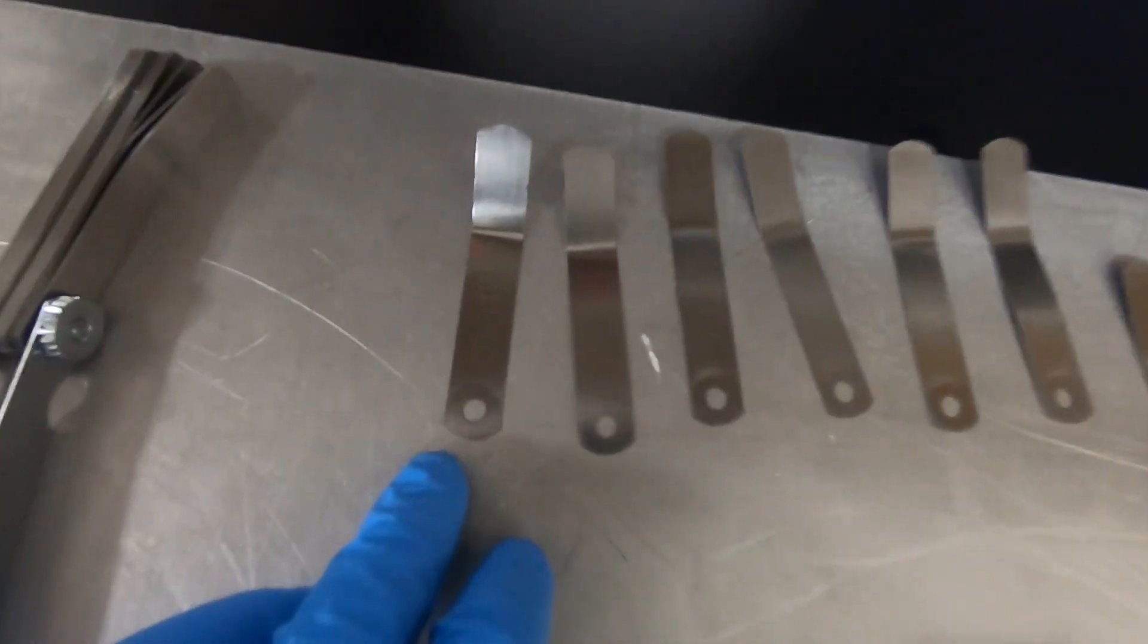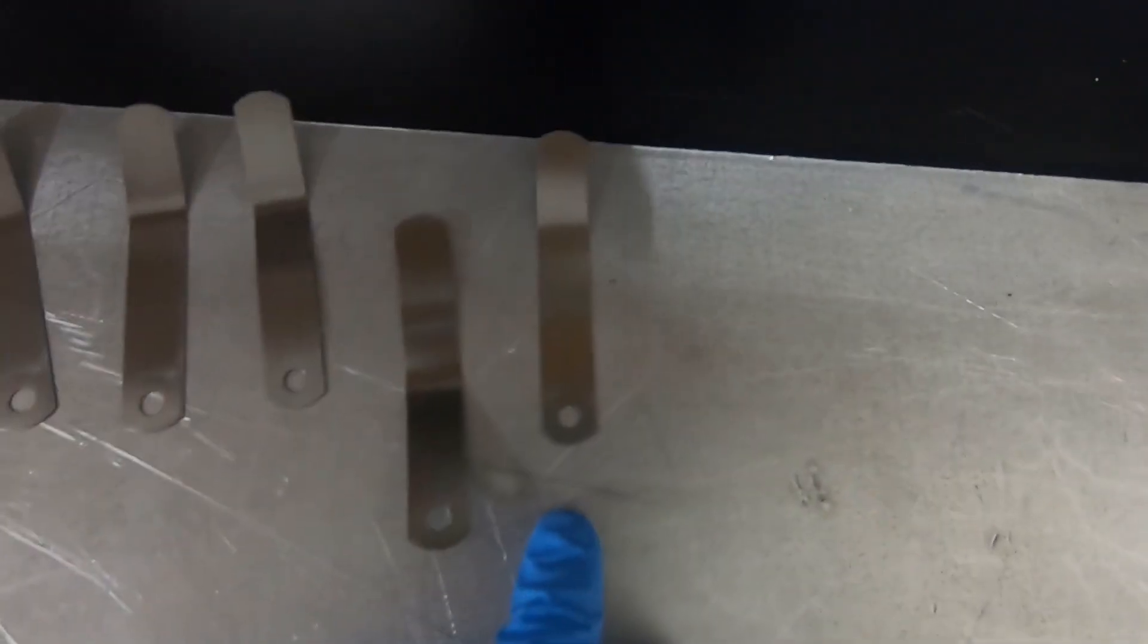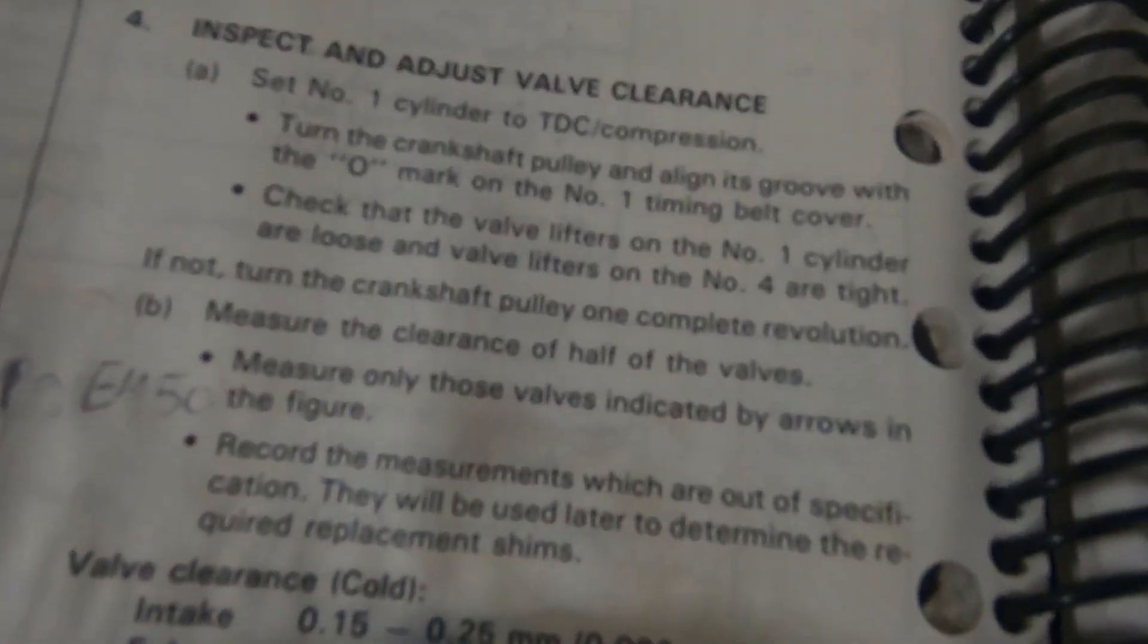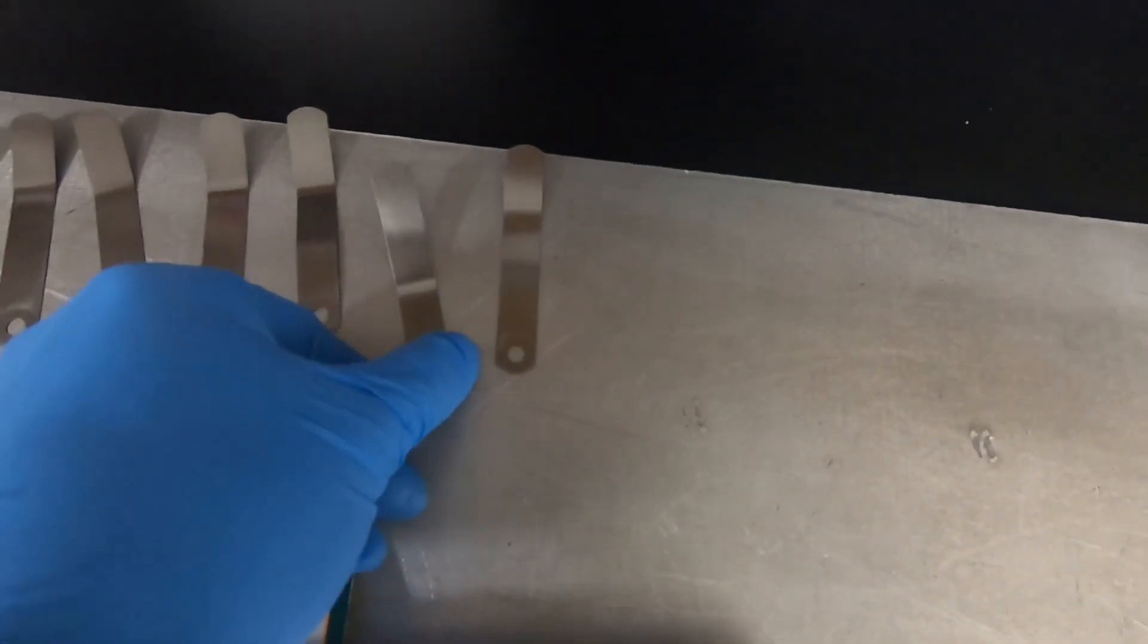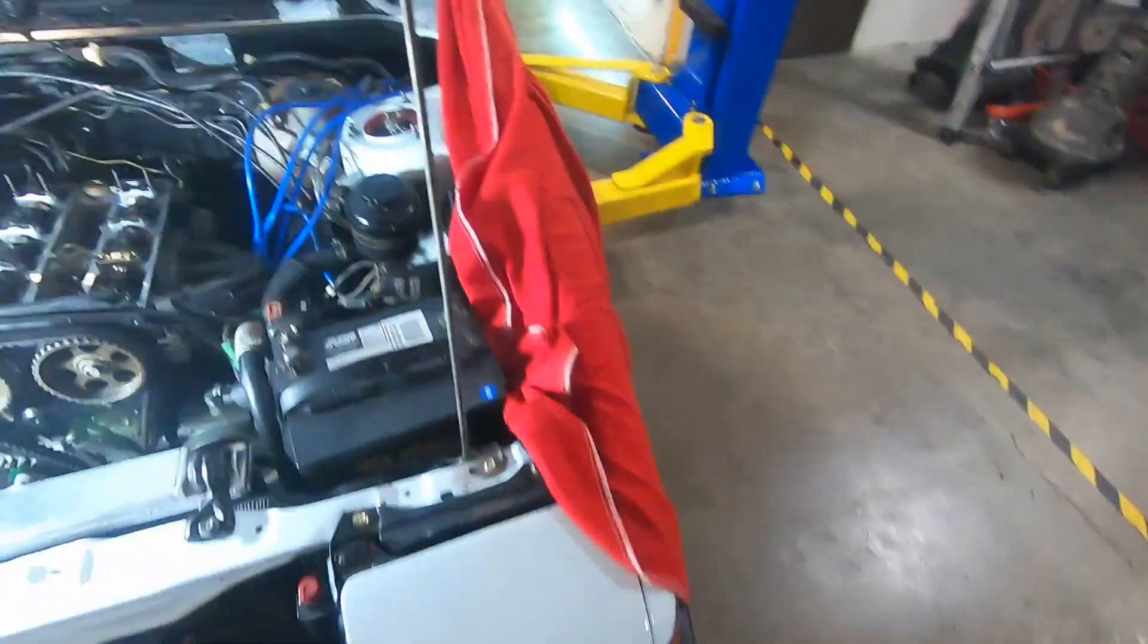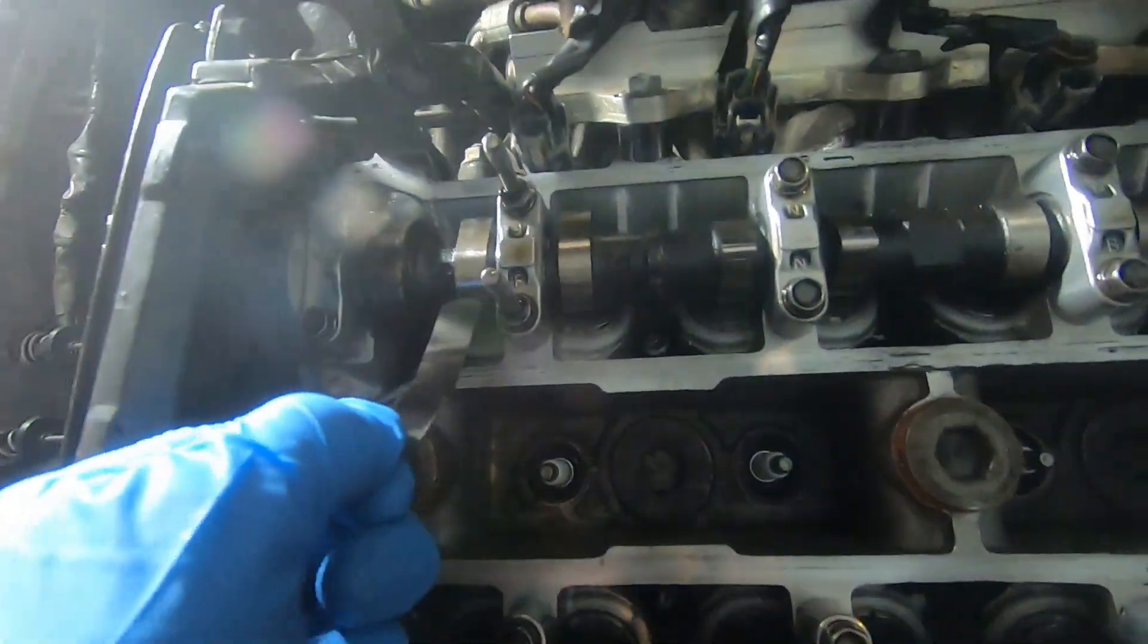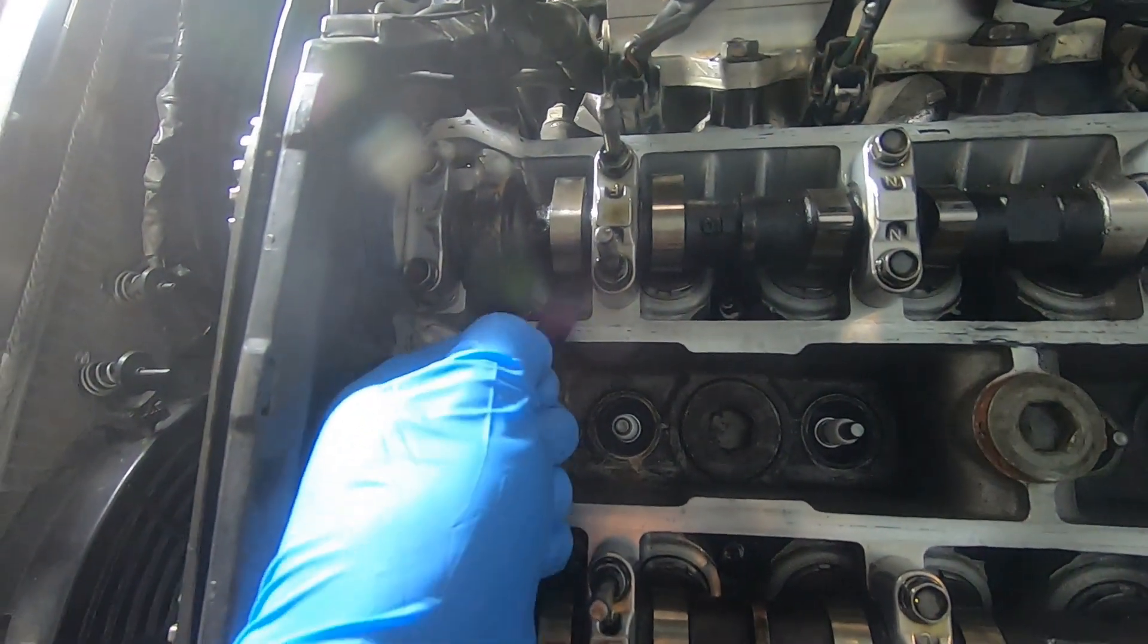I bent these at the end to help you out feel the valve clearance. I already know number one, the intake valve, that one's going to be too loose. I'll just show you guys. The maximum spec is 0.25 millimeters. I'm going to put my 0.305 in.